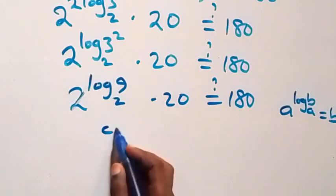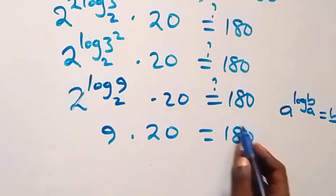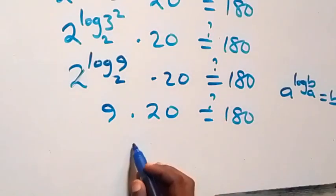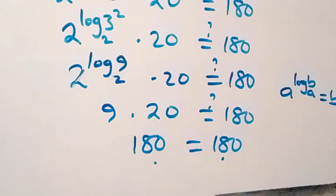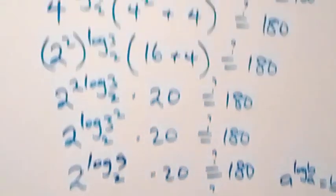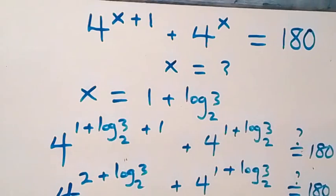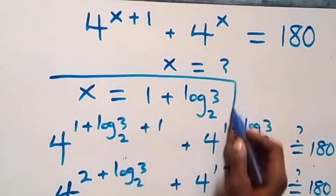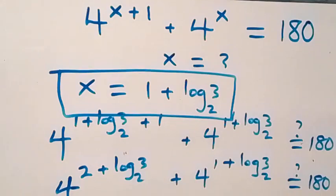This is the same thing as 9, then 9 times 20 equals 180, and of course 9 times 20 is 180, which equals 180. The left-hand side equals the right-hand side. Hence we conclude that x equals 1 plus log 3 to base 2 satisfies this given problem. Thank you for watching — don't forget to subscribe for more videos, turn on the notification bell, share this video, and put your comments in the comment section. See you in class, bye for now.